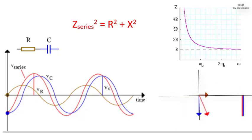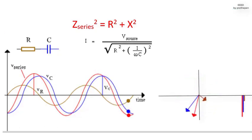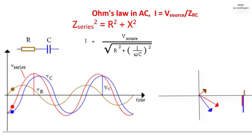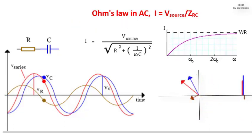Ohm's law in AC. We can rearrange the equations above to obtain the current flowing in this circuit. Alternatively, we can simply use the Ohm's law analogy and say that I equals V source slash ZRC. Where I goes to 0 at DC, capacitor is open circuit, and to V slash R at high frequencies, no time to charge the capacitor.